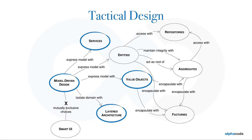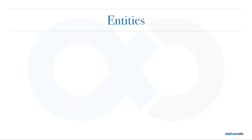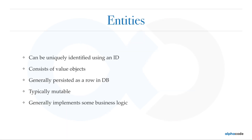Now that we have knowledge of what value objects are, let's move on to entities. Entities are generally an object which can be uniquely identified using an ID, and they consist of value objects or they generally represent a real-world object. They are generally persisted as a row in a database with a primary key, are typically mutable, and generally implement some business logic based on what they are.